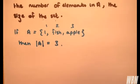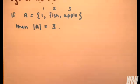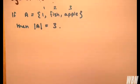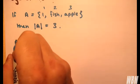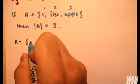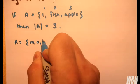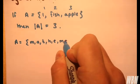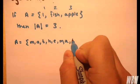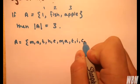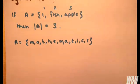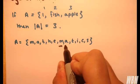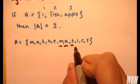Now, what happens if we have repetitions? Well, typically we ignore the repetitions. So here's another example: we have set A equal to the letters in the word 'mathematics'. We can count how many repetitions there are — there are 1, 2, 3 repetitions — so we can rewrite the set.